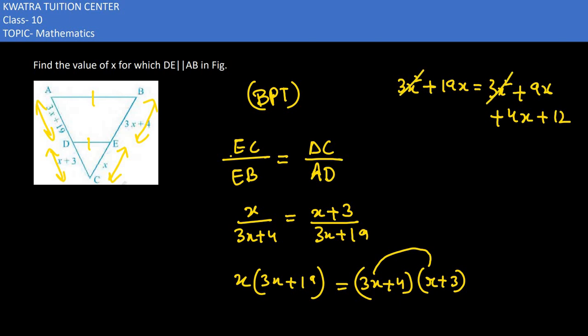3x² cancels with 3x². We take all the x values to one side, so 19x minus 9x which is 10x, then minus 4x gives 6x. On the right we have 12, so 6x equals 12, and x equals 2.